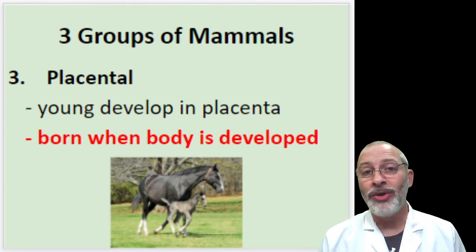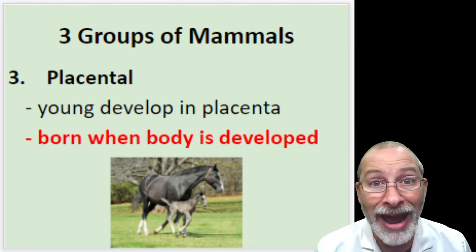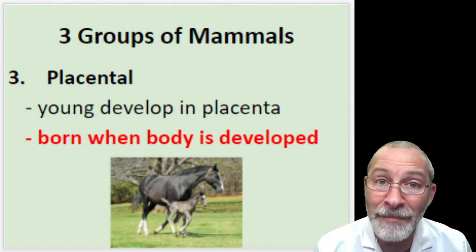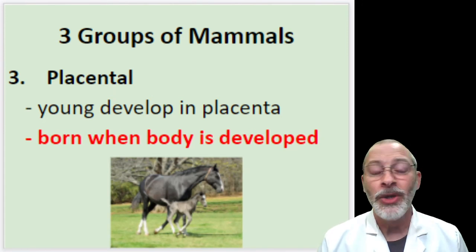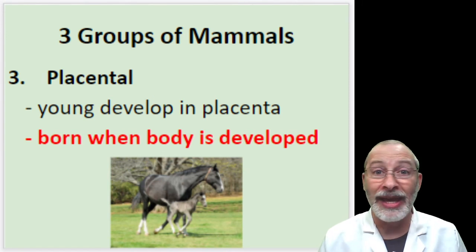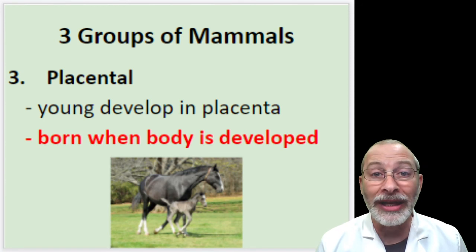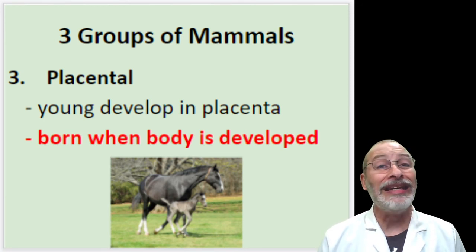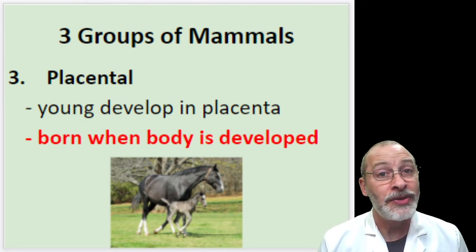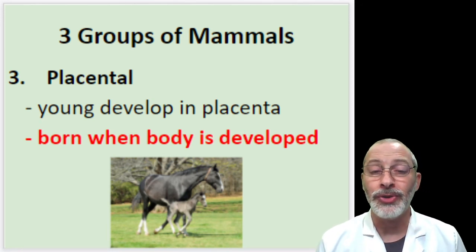Humans are different — you don't have baby humans running around on their own. There is an extended period of time called infancy. However, humans are born with two arms, two legs, functioning senses, and all organs developed enough to exist outside the mother's womb. We are placental mammals, but we don't develop quite as quickly as other mammals do.